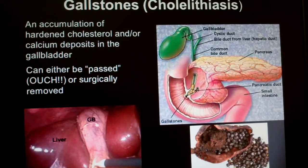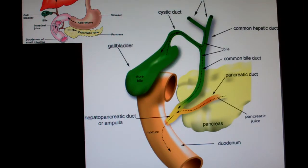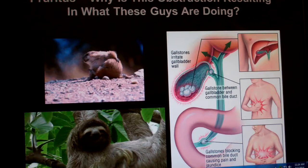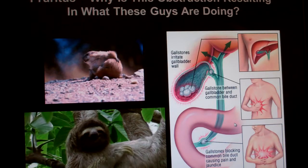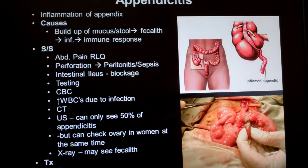Gallstones are just a bunch of hardened cholesterol and/or calcium deposits that get stuck in the gallbladder. When they try to pass out through the ducts, sometimes they get stuck, as shown in this picture. Notice how this inflammation of the gallbladder wall also causes itching, or pruritus, as we call it.